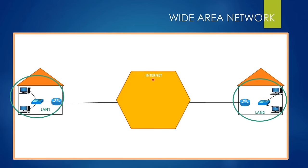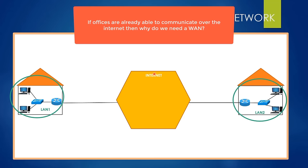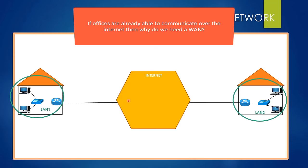So the question is: if these offices can already communicate over the internet, why do we need another special network like a WAN? Please be careful — communication over the internet directly, and communication over a special WAN belonging to a company, is a whole different thing. I want you to think about that question for a short time and try to answer it.